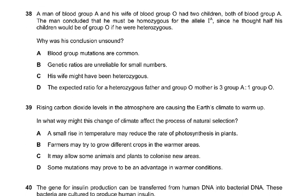Question 38: A man of blood group A and his wife of blood group O had two children, both of blood group A. The man concluded that he must be homozygous for the I^A allele since he thought half the children would be of group O if he were heterozygous. Why was his conclusion unsound?